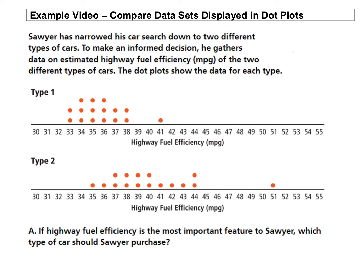In type two, you can see that the data is a little bit higher. We're not clustered in lower miles per gallon. We've got an outlier up here at 51. So these cars in general are going to get more miles per gallon when driving on the highway.